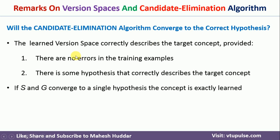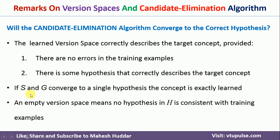If these two criteria are satisfied, the candidate elimination algorithm will definitely give you the correct hypothesis. Additionally, if S and G — the specific boundary and generic boundary — are the same, the concept is learned exactly. If S and G are different, the version space contains more than one hypothesis, meaning the concept is partially learned. If S and G are both empty, the version space is empty, indicating no hypothesis in H is consistent with the training examples.